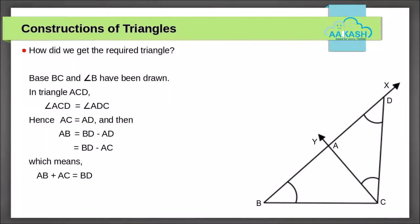Now we will see how exactly we obtained that triangle. Draw base BC and angle B. In triangle ACD, angle ACD is equal to ADC. Hence, AC is equal to AD, and then AB is equal to BD minus AD, which equals BD minus AC. This indicates AB plus AC is equal to BD.